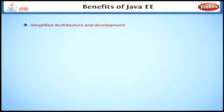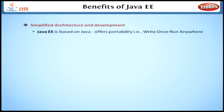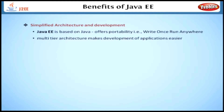We all know that Java EE is based on Java, so it offers portability, i.e., write once, run anywhere property. We are using multi-tier architecture, which makes development of applications a lot easier. Next one is scalability to meet the various demands.